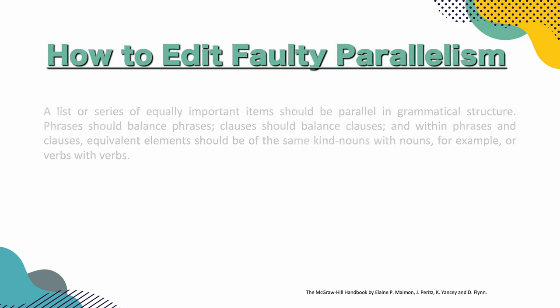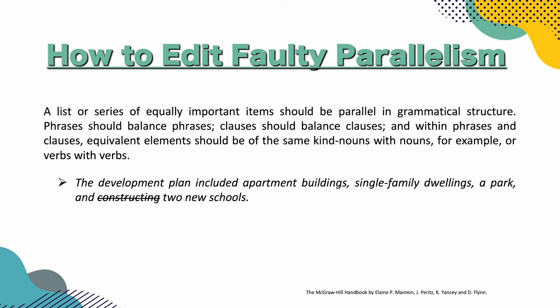Let's go to the next point: how to edit faulty parallelism. A list or series of equally important items should be parallel in grammatical structure. Phrases should balance phrases. Clauses should balance clauses. And within phrases and clauses, equivalent elements should be the same kind — nouns with nouns, for example, or verbs with verbs.